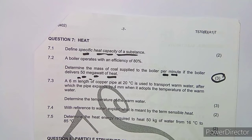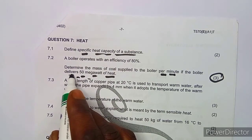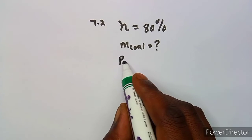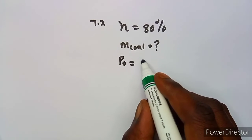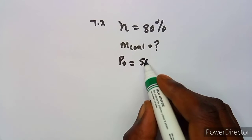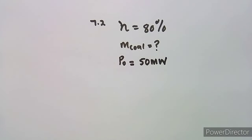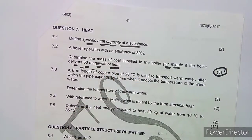The boiler delivers 50 megawatts of heat — that's the power being delivered, so it's the output power. P_out equals 50 megawatts. The question is asking us to determine the mass of coal supplied.